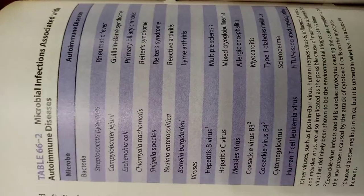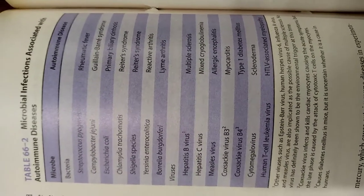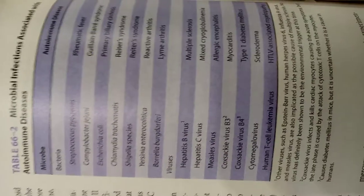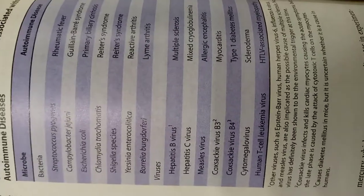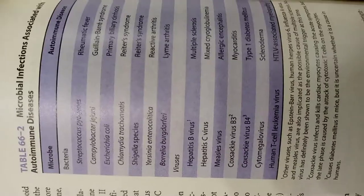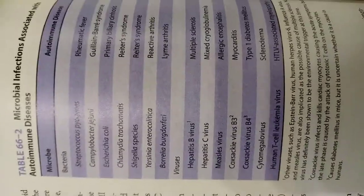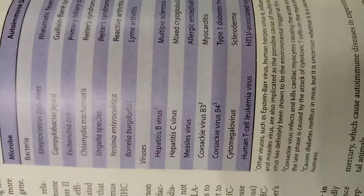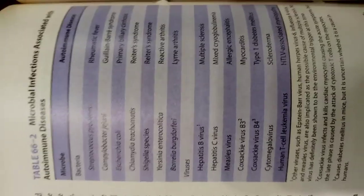Here you can see the association between some microbial pathogens and autoimmune diseases: Streptococcus pyogenes with rheumatic fever, Campylobacter jejuni with GB syndrome, E. coli with primary biliary cirrhosis, Chlamydia with Ritter's syndrome, Shigella with Ritter's syndrome, and hepatitis B virus infection associated with multiple sclerosis.